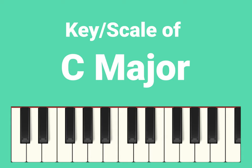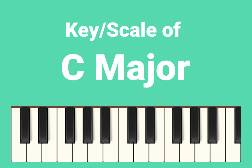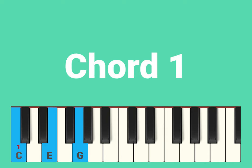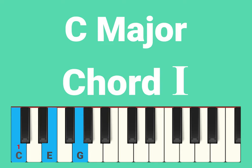Let's look at the scale of C major — it uses just the white notes between two C's. Let's give each of these keys a number. We'll make a chord built on the first note, C, and call this chord one. Using the notes of the C major scale — just the white notes — they form a major chord. In Roman numerals, this chord would be shown with an uppercase one.